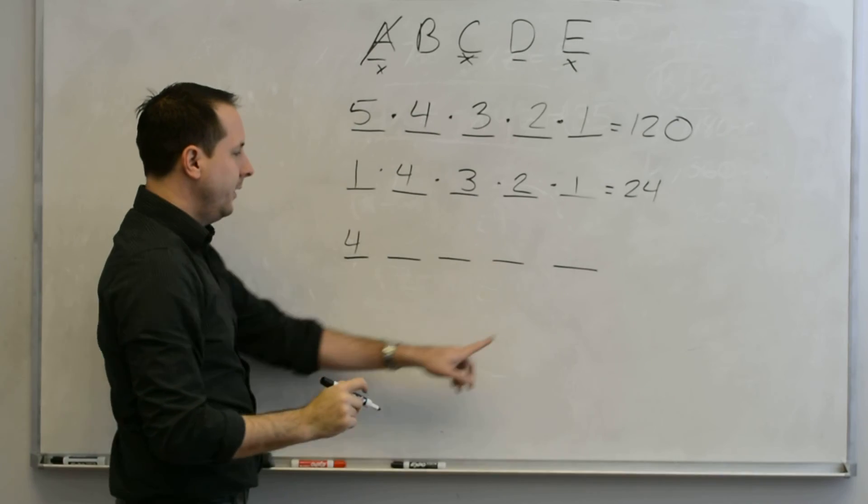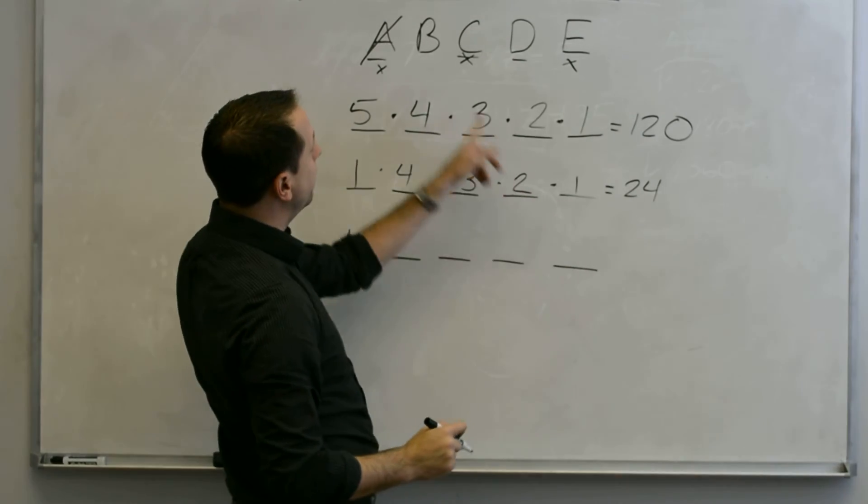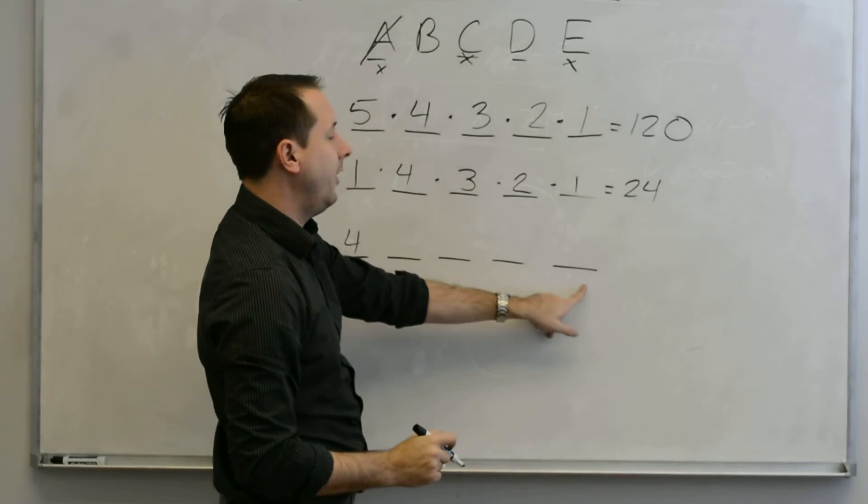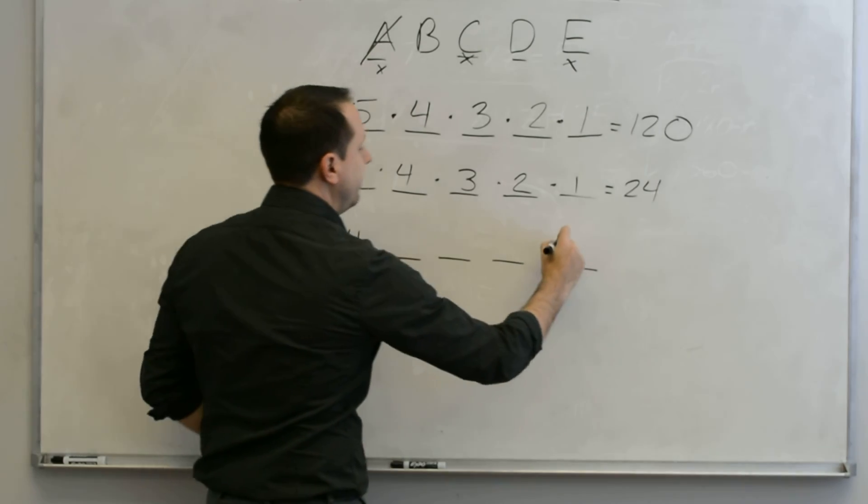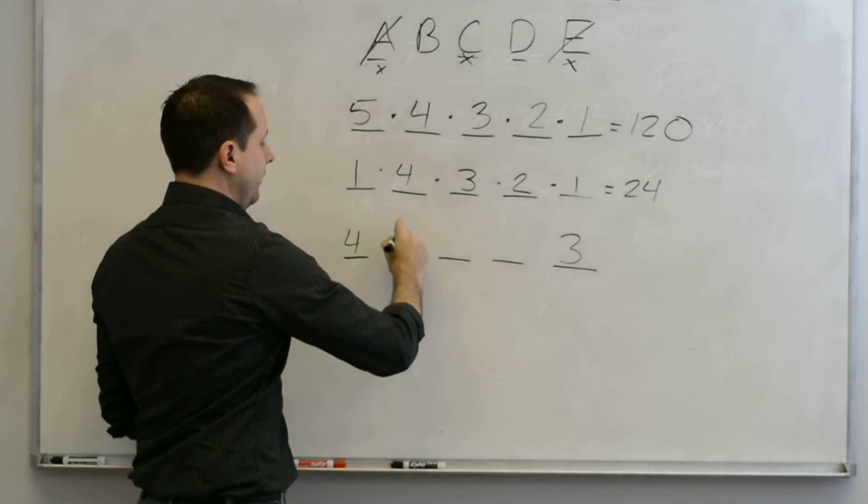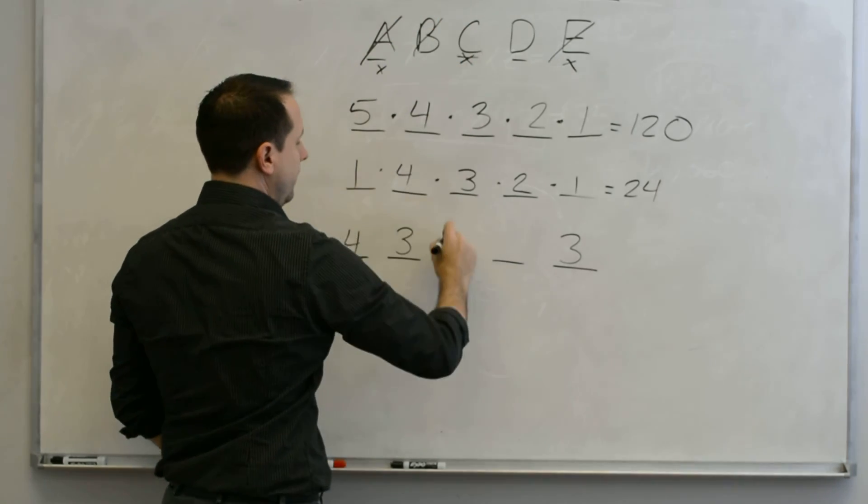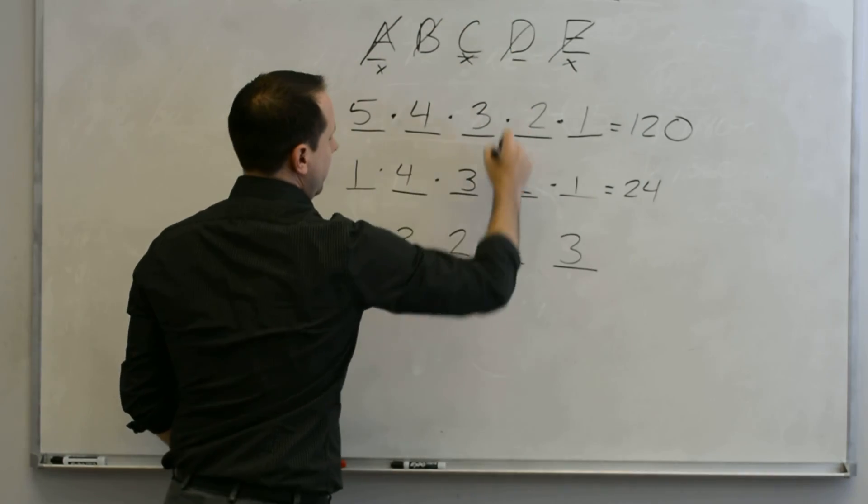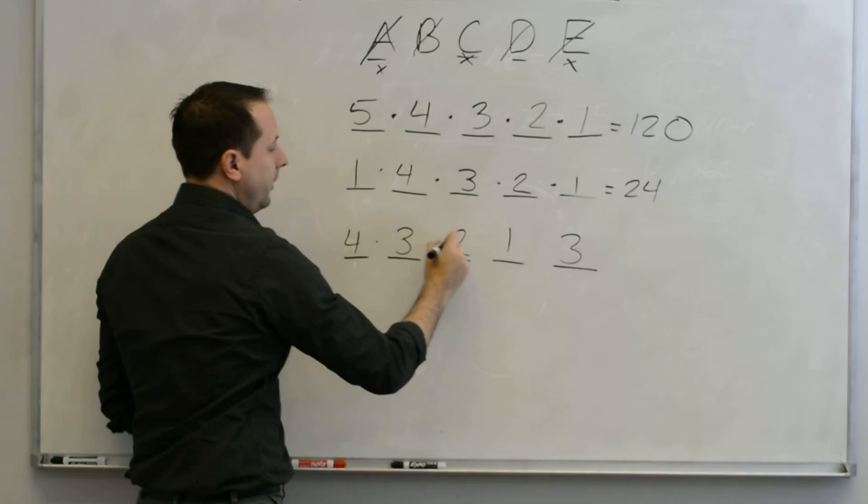So I picked A that time. If I skip to the end, I've only got three possible values for the last letter because it couldn't be C as well. And then these three in the middle could be anything. So I've got three, and then two, and then one. Multiply that out, and you'll get 72.